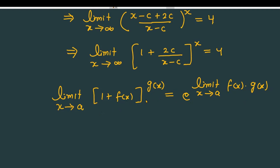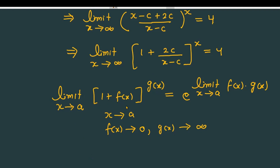The format alone is not sufficient — there are two restrictions as well. The first restriction is that as x tends to a, f(x) must approach 0. And the second restriction is that g(x), the power function, must approach infinity. So if f(x) tends to 0 and g(x) tends to infinity, you can write it as e raised to the power [limit x tending to a of f(x) into g(x)].